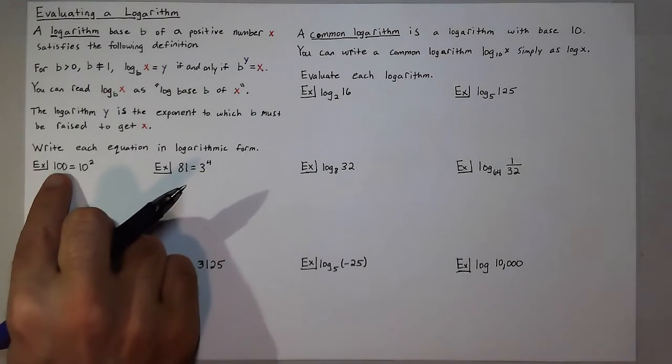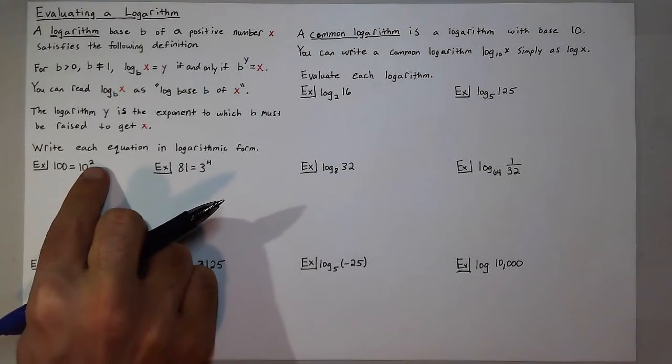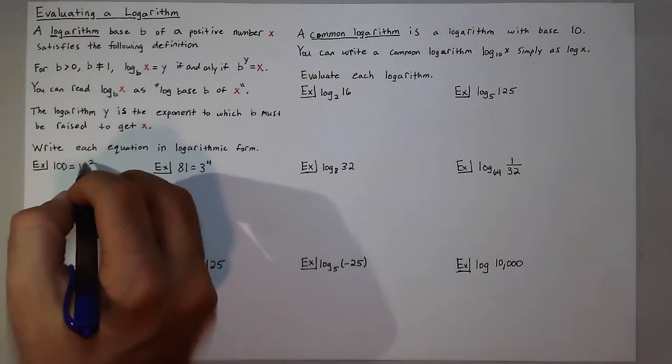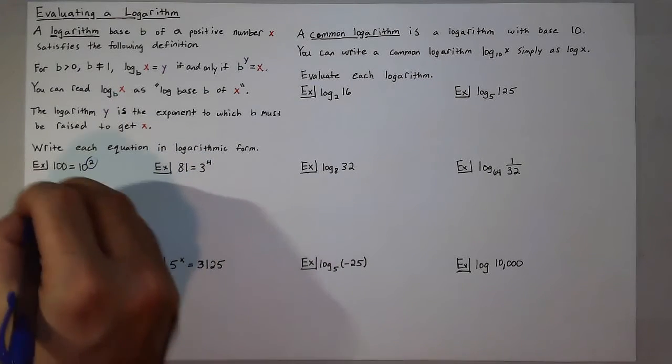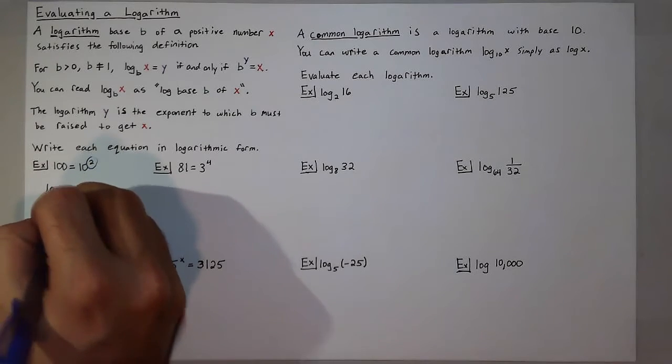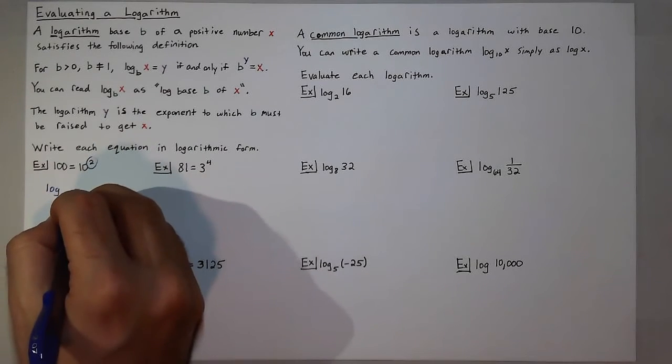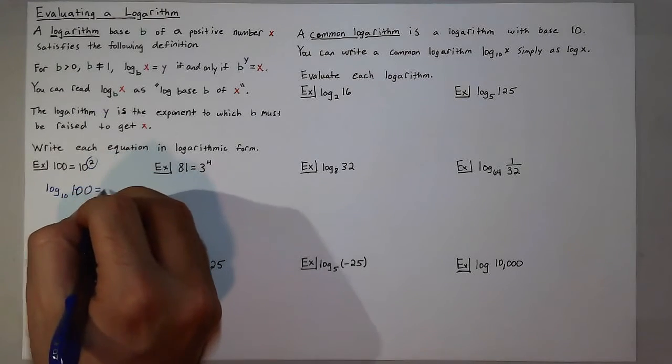If we have 100 is equal to 10 squared, the logarithm is equal to that exponent. So when we write the log, we'll say log base 10 of 100 is equal to 2.